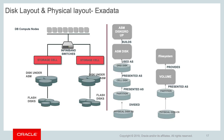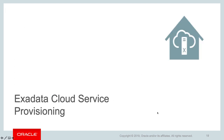Looking at the disk layout: compute nodes have 4 SAS drives, partitioned and formed into volumes mounted as file systems. On the storage cell, physical disks are divided into partitions, then cell disks are created, then grid disks, and from grid disks ASM disks are created. Different ASM disk groups are created including DATA, RECO, and SPARSE, completing the Exadata storage hierarchy.